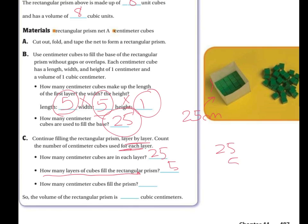Well, 25 times the five layers. Five times five is 25. Five times two is 10, plus two is 12. So 125 cubes filled the rectangular prism. So the volume is 125 cubic centimeters. Also written like this, centimeters cubed, with the little cube at the top.